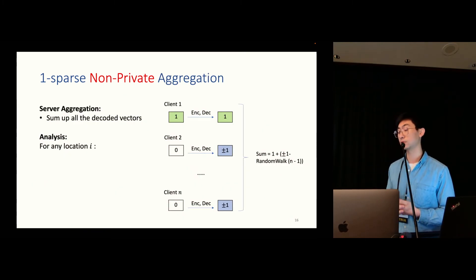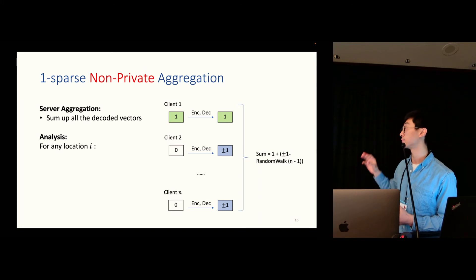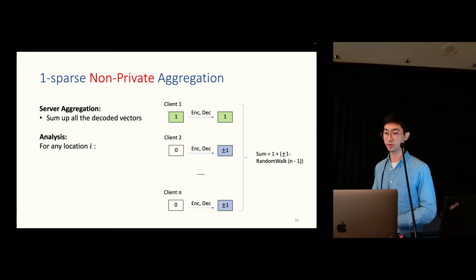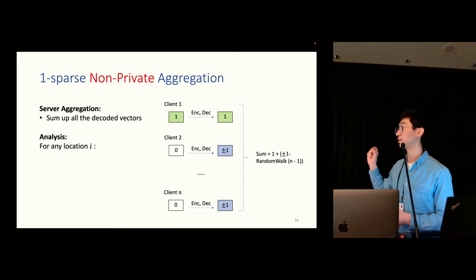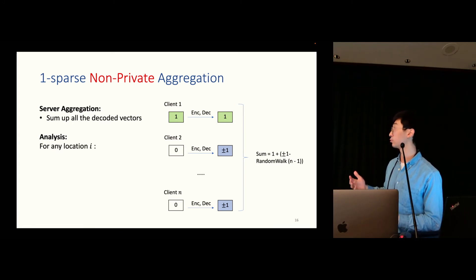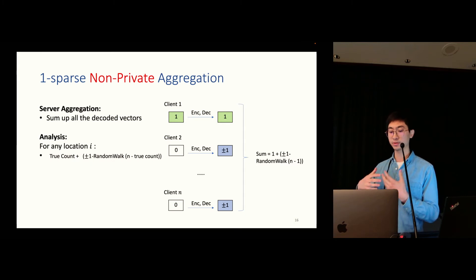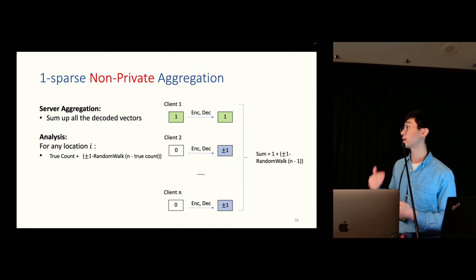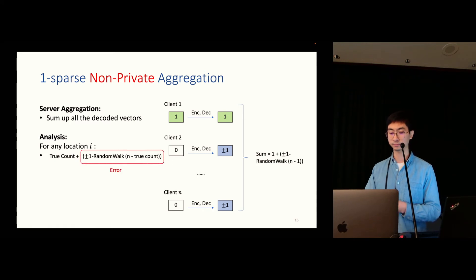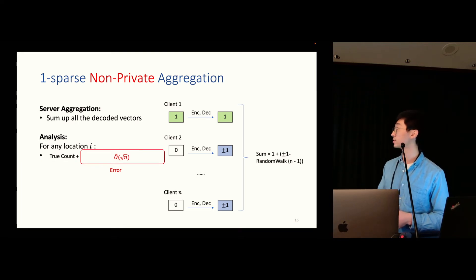So, the server aggregation is very simple. That is simply sum of all the decoded vectors. And here's a very, very simple analysis. For example, let's say only client 1 has a value 1 in location i, and client 2 to client n will all have 0 in that location. After the encoding and decoding process, client 1 is guaranteed to output a 1 in that location, and client 2 to client n will output a random bit. And the summation of all those values is exactly 1 plus a random walk of plus 1 or negative 1 with step n minus 1. And this analysis actually applies to every other location. So, for any location i, the output would be the true count plus a plus 1 negative 1 random walk with the count of n minus the true count. And this random walk part is exactly the error. And with a very standard concentration bound, we can prove that it is square root n, roughly.